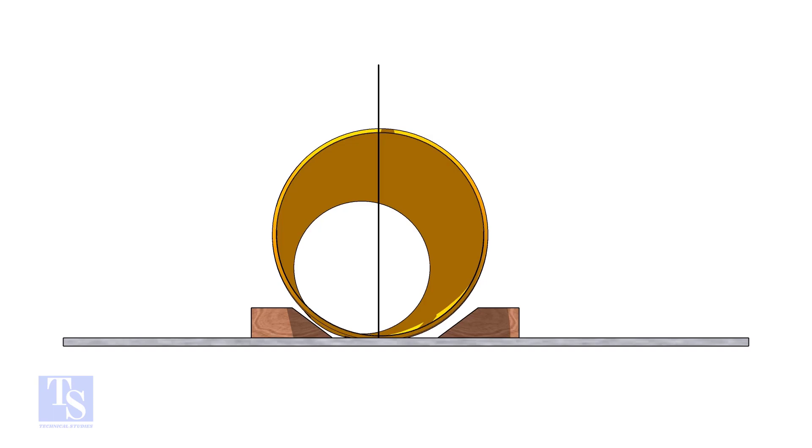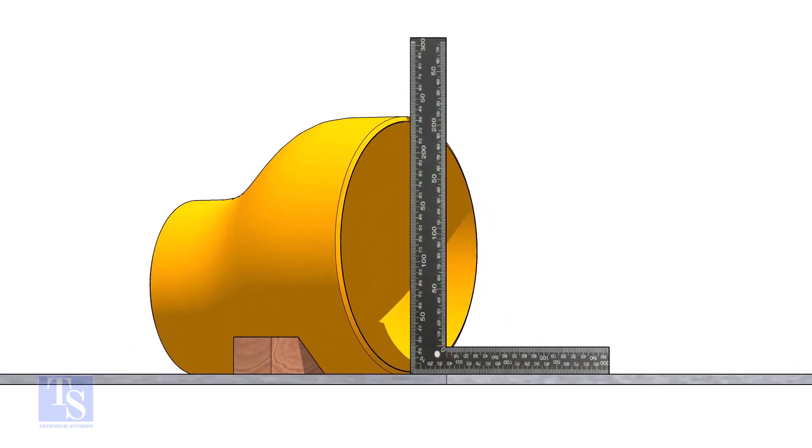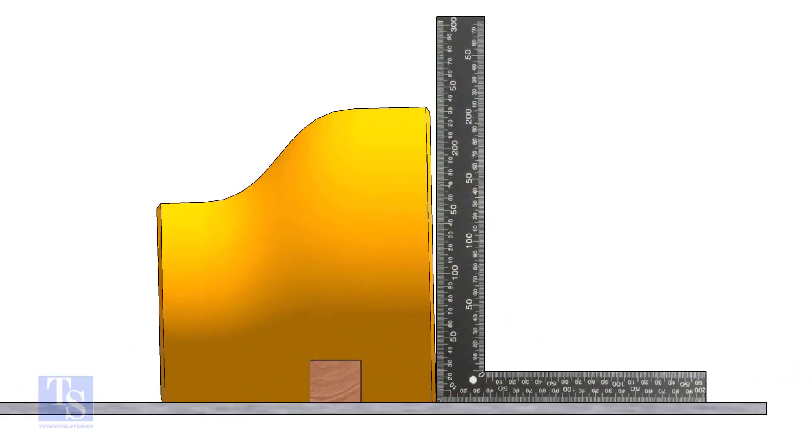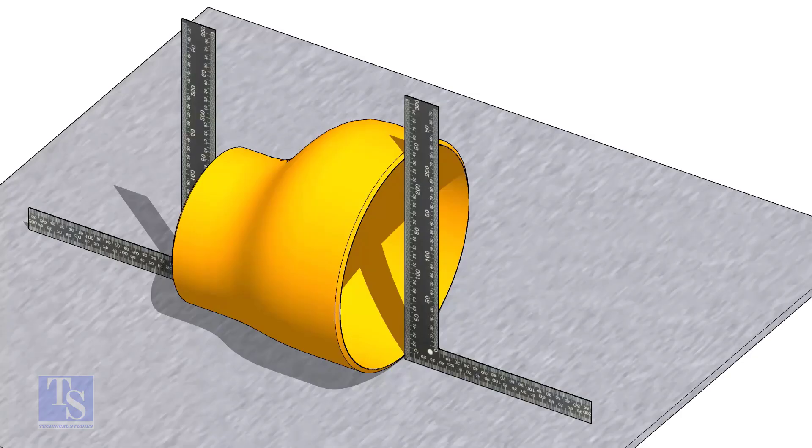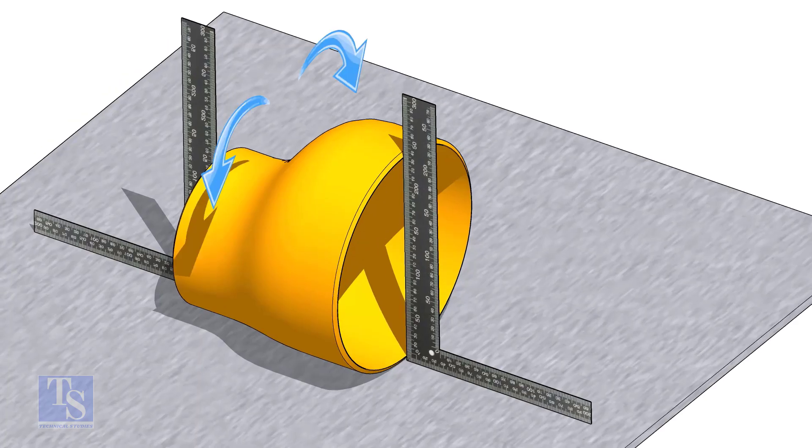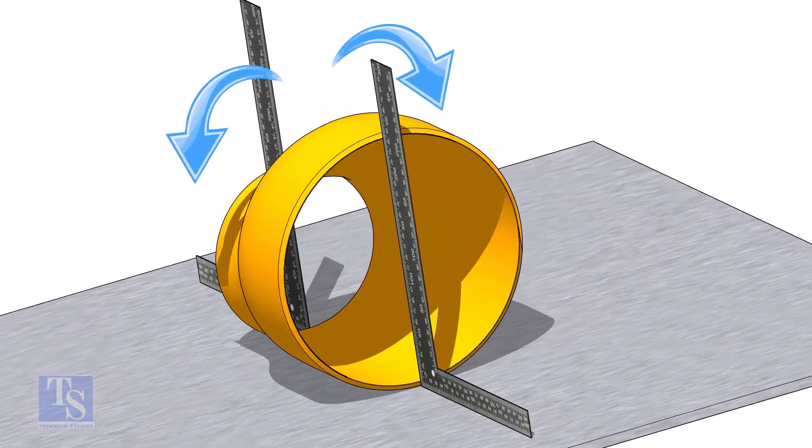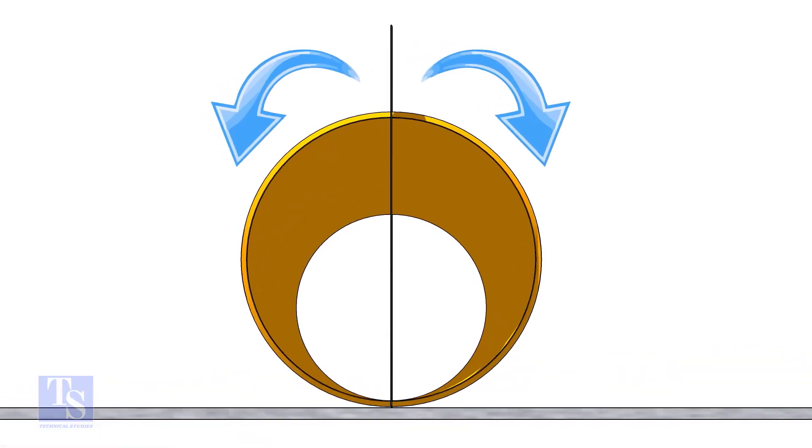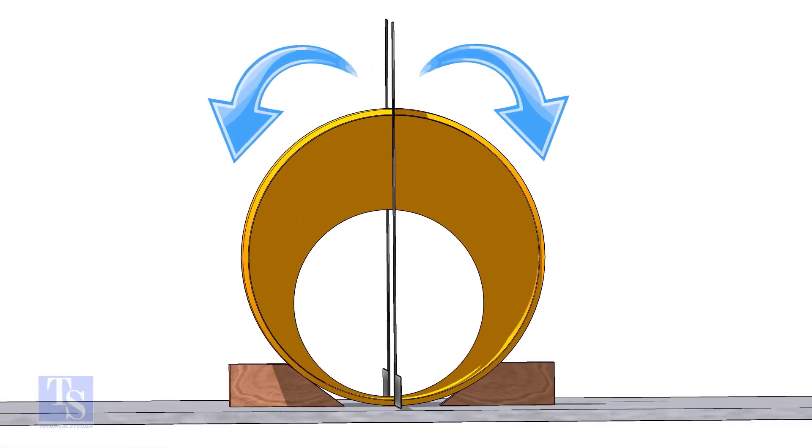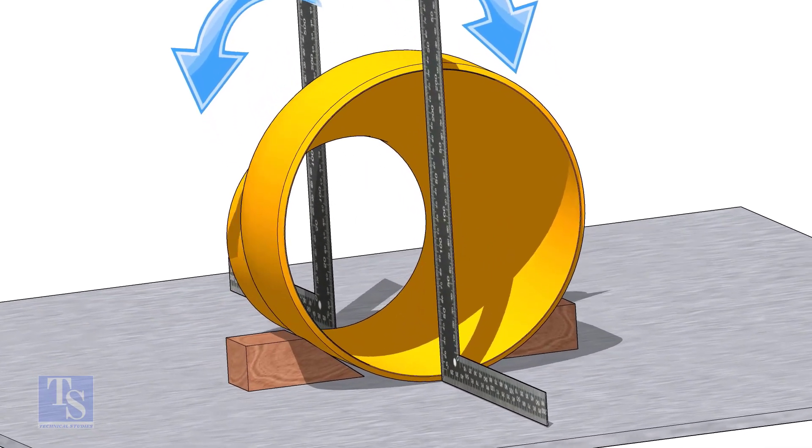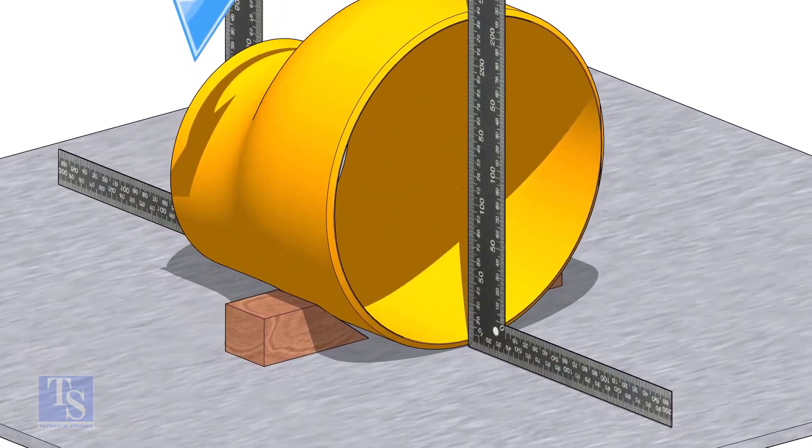Put the reducer on a level plate and check the squareness with a right angle. You will see a gap between the right angle and the reducer. Slowly rotate the reducer clockwise and anti-clockwise. You will see at some points the reducer touches the right angle at the top and at the bottom. This means that now the reducer sits on its straight side.